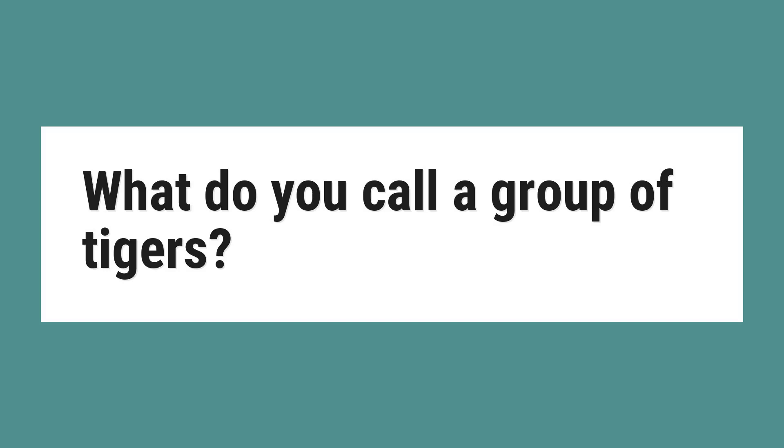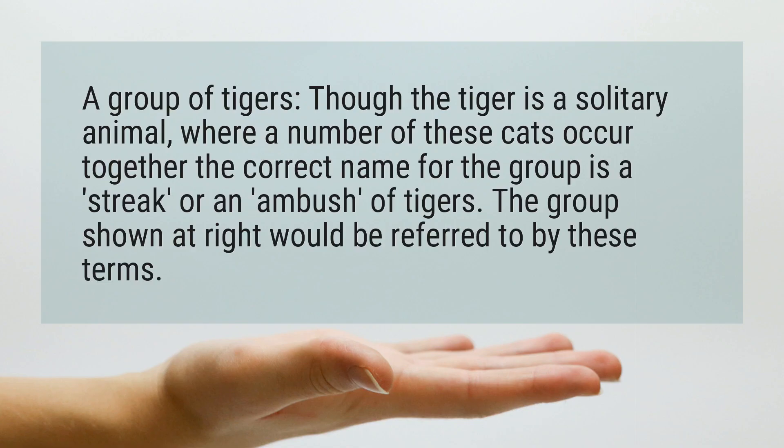What do you call a group of tigers? A group of tigers — though the tiger is a solitary animal — where a number of these cats occur together, the correct name for the group is a streak, or an ambush, of tigers. The group shown at right would be referred to by these terms.